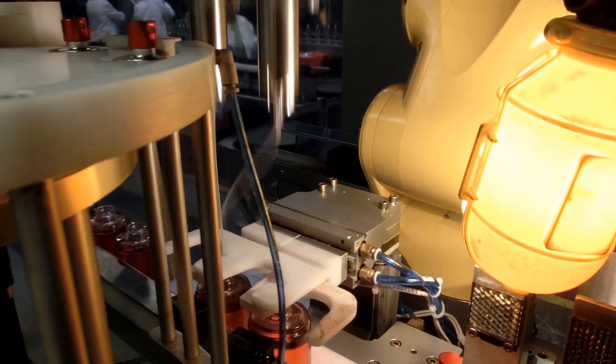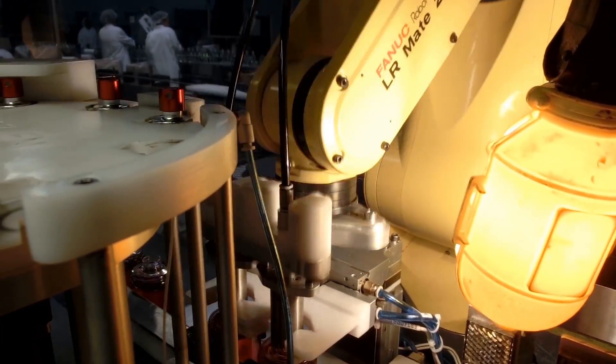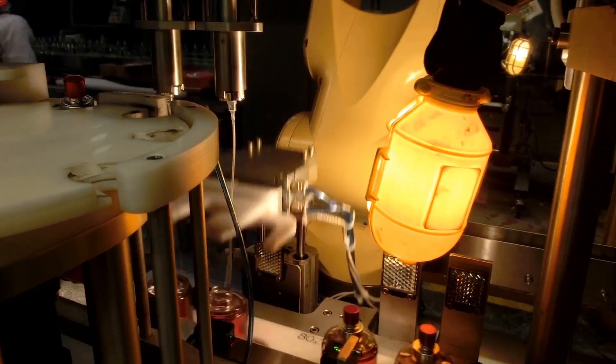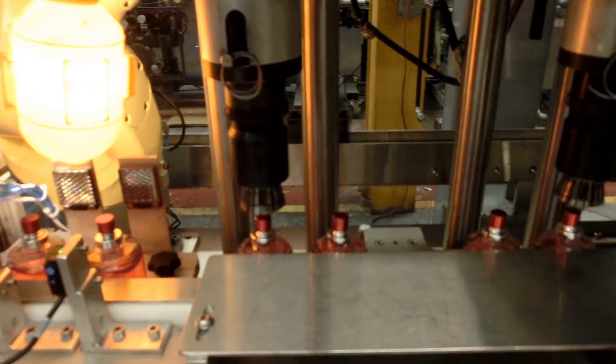A pair of pump crimpers extends down and crimps the pumps onto the bottles while they are held in place. Collars are then pressed onto the bottles.